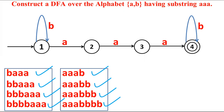Now consider 'aaaa' — whether it can be accepted or not. Yes, it has to be accepted. And 'aaaaa', 'aaaaaa', and so on are also accepted. So how can we put the self-loop on the last state? We need to have a self-loop on the last state so that 'aaa' followed by any number of 'a's is handled correctly.